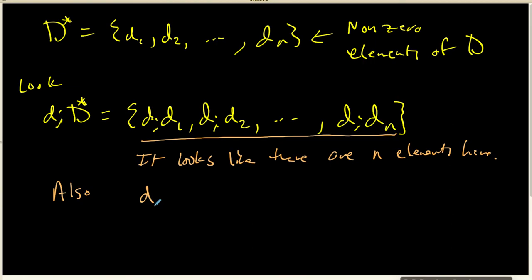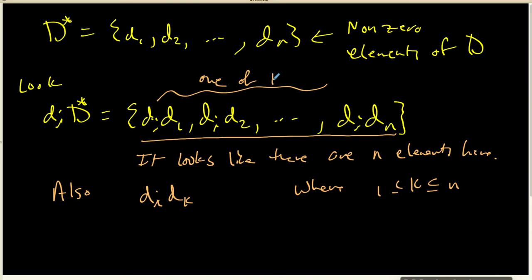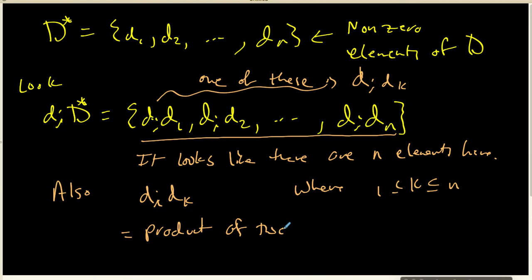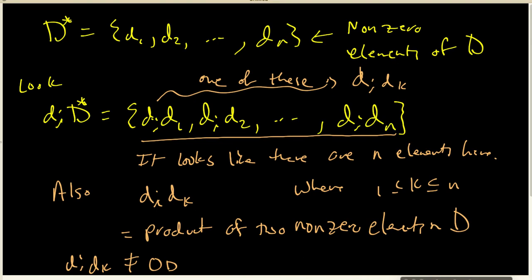Every one of these elements — if I look at D_i times D_k, where D_k is one of these elements — it is a product of two nonzero elements inside domain D. And hence, D_i times D_k cannot be equal to zero inside D. That says D_i times D_k is going to be an element of D*, so this set is a subset of D*.